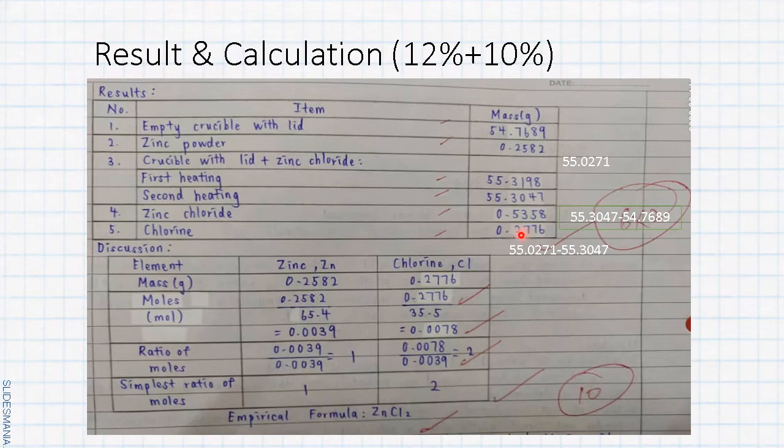After we succeed to find the mass of zinc and mass of chlorine, we form a table. First column: element, zinc and chlorine. Then mass of compound, unit in grams. Just pick from here: mass of chlorine 0.2776 and mass of zinc 0.2582. Then we find the number of moles of both elements. Don't forget the unit.